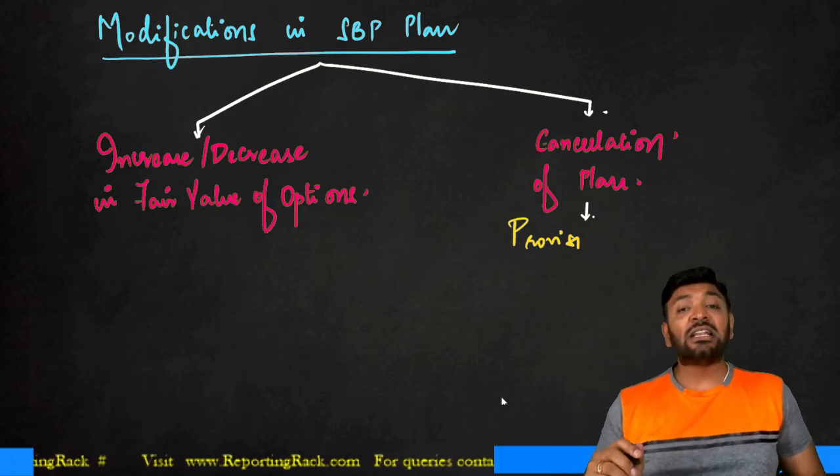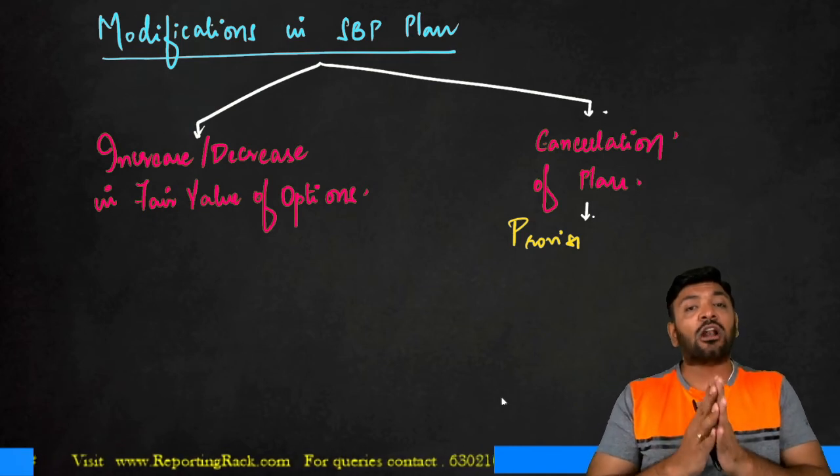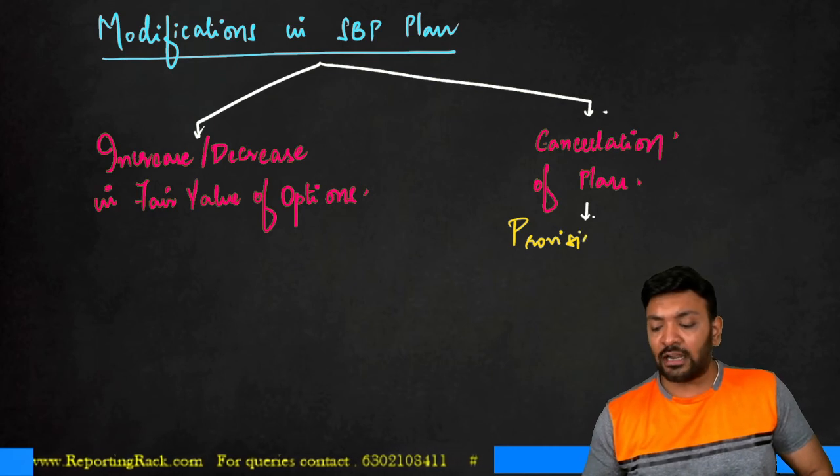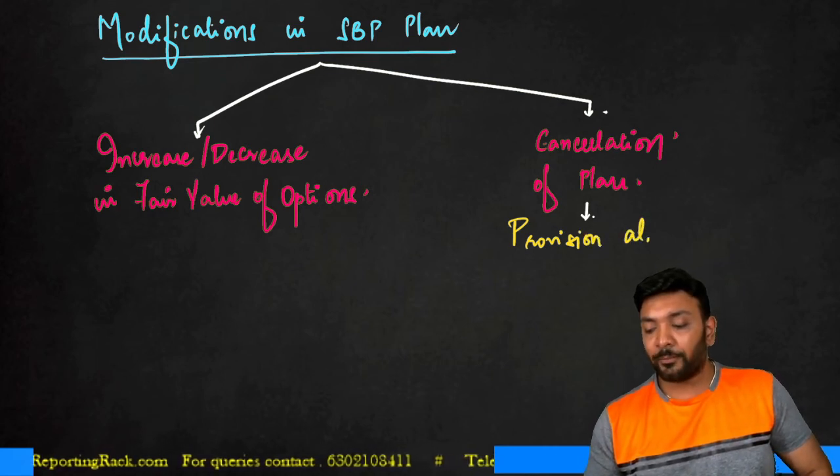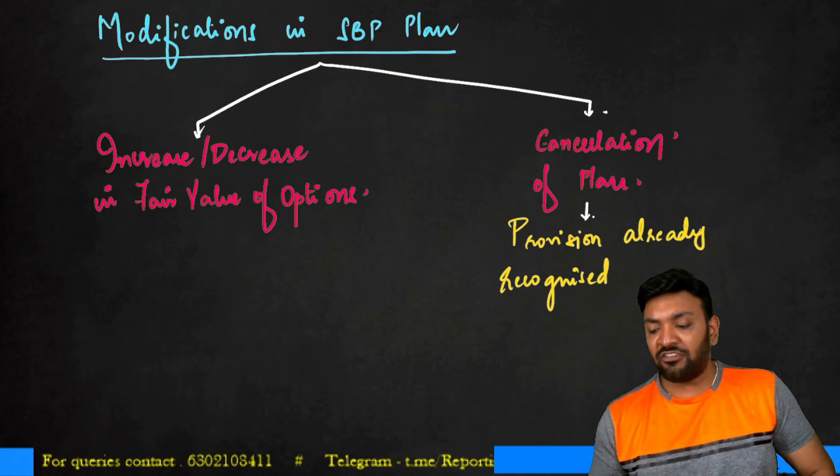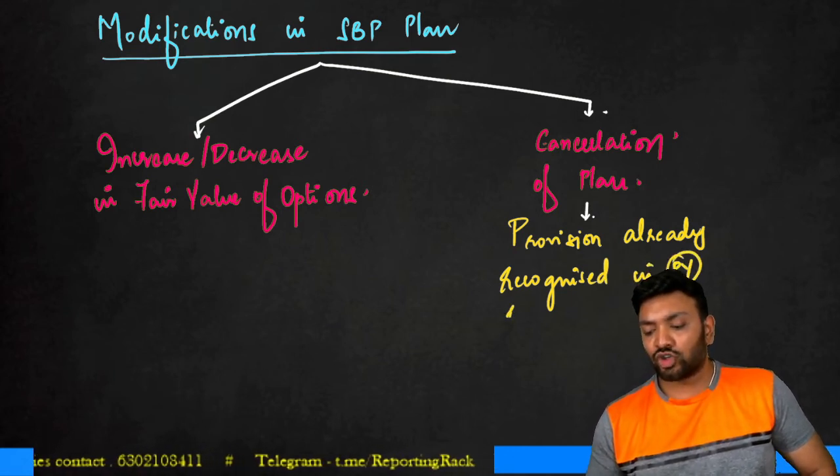Sometimes there could be a cancellation of plan itself. Whenever there is a cancellation of plan, that means the enterprise is saying that they cannot continue with the plan anymore. In such cases, the provision which is already recognized in previous years should be reversed.